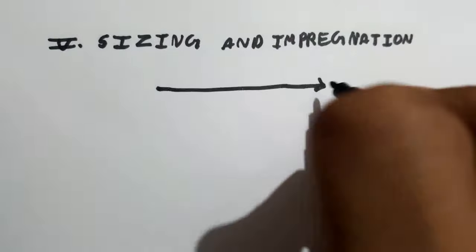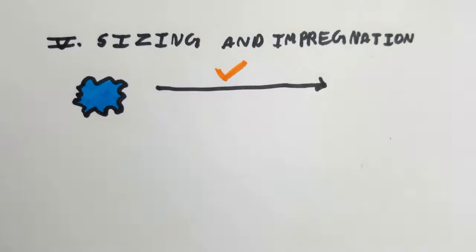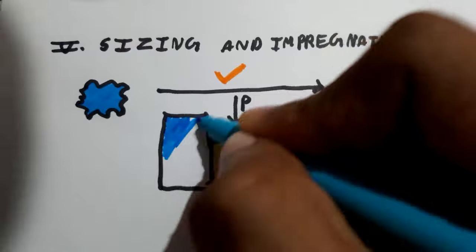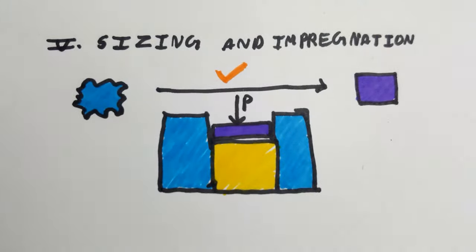Next comes sizing or impregnation, which is the process of rectifying the sintered compact to the final required dimensions. Sizing is done by placing the compact in a master die and applying pressure.